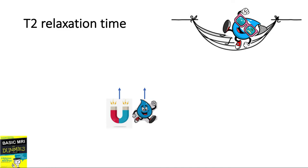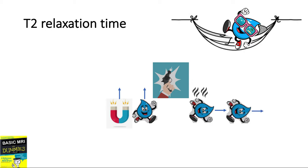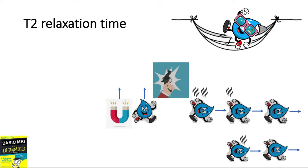Let us look at this another way. This is a water proton spinning in the same direction as the net magnetization produced by the magnet. It gets hit with an RF pulse, gains transverse magnetization, and absorbs some energy. What happens is that it will transfer some of its energy to the nearby protons. Because of this energy transfer from one spinning proton to another, we call T2 relaxation spin-spin relaxation.